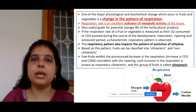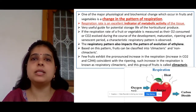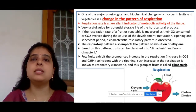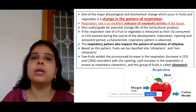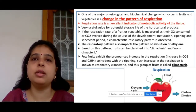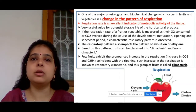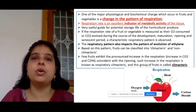Respiration and ethylene are the main factors which determine the quality of the produce after harvesting. For example, if you harvest mango, the quality will depend on what the respiration rate is and what the ethylene emission is. These factors determine the quality of a mango, vegetable, or fruit that is harvested.